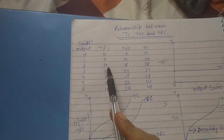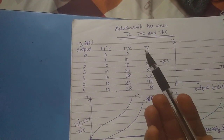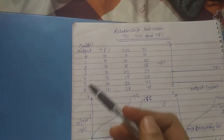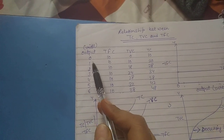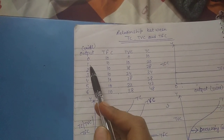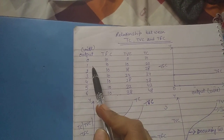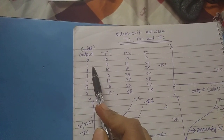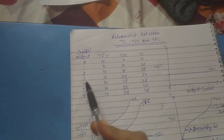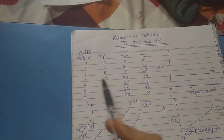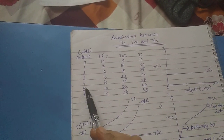Total fixed cost is that cost which does not change with the change in the level of output. As you can see in the schedule, as output is increasing — suppose when the producer is producing the first unit of output, TFC is 10. When he is producing the third unit, again TFC is the same.